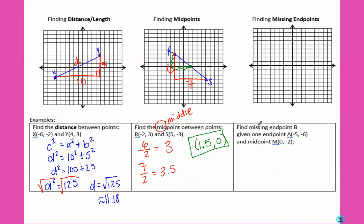Now, in our third example, find the missing endpoint given one endpoint and one midpoint. So we already know the middle. So let's plot these. So A is negative 5, negative 6. And M is 0, negative 2. So we already know that that is the middle. The middle is the same distance from either endpoint.